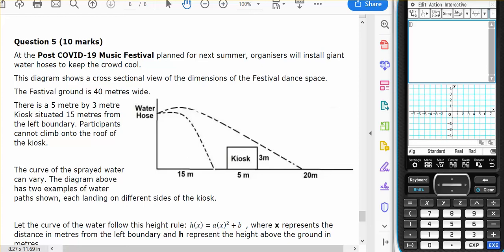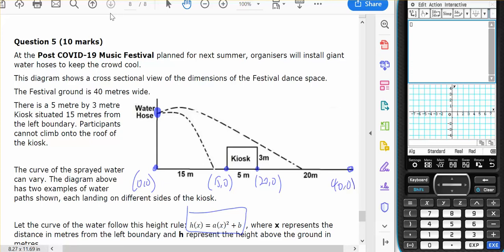This is question number five in the functions tech allowed SAC. We have a water hose that is shooting water from this position here and this is its rule. So I'm going to call that zero zero. This point here is fifteen and zero. That point there is twenty and zero and this point here is forty and zero and this point here is twenty and three and this point here will be fifteen and three.